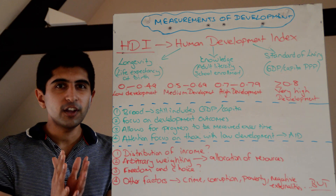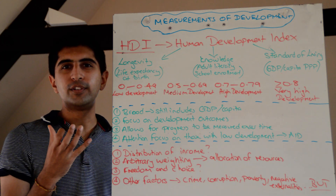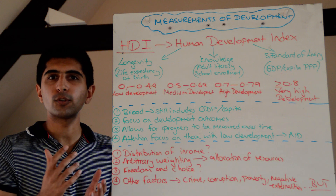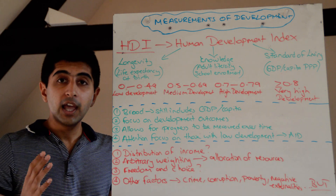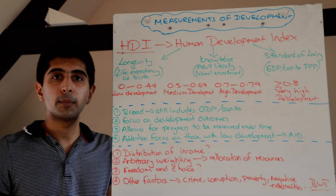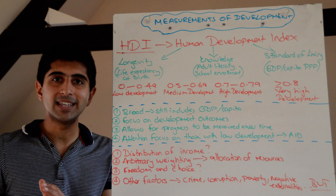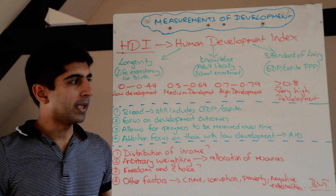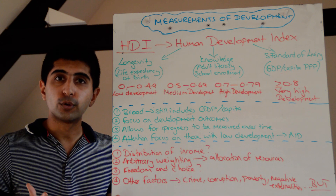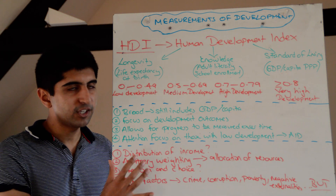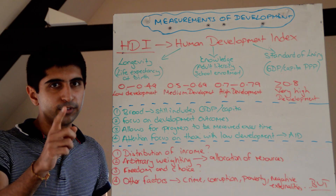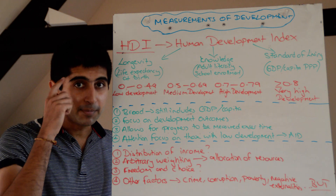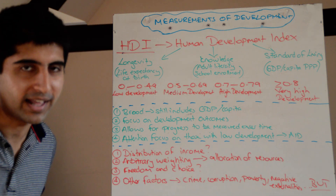So the HDI is very much the big measure of development indicators — a composite indicator, and that's why it's considered quite a good one. If you're sitting A2, you might also need to know about the ISEW, a sustainable indicator of development you can revise in your own time. But the HDI is the most important. I hope that makes sense — thank you very much, keep this clear in your head, and I'll see you all next time.